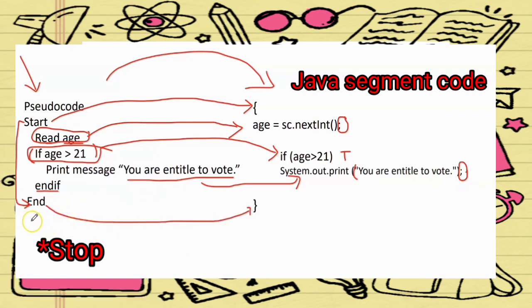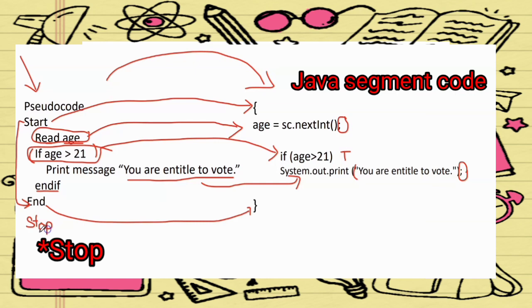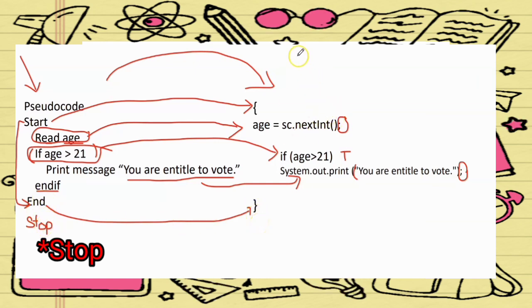Stop — close curly bracket. This is an example of a Java segment code.